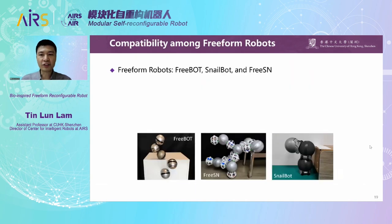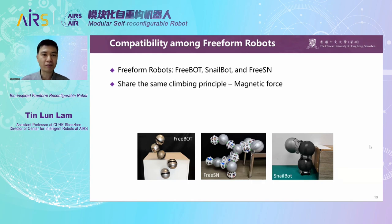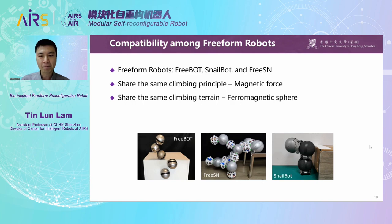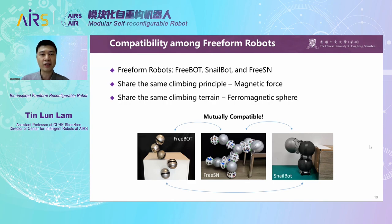We have introduced our three types of modular self-reconfigurable robots: FreeBot, SnailBot, and Friesen. We call them Freeform robots because they can all climb on other robots freely, and they share the same climbing principle — using magnetic force for climbing — and the same climbing terrain: the ferromagnetic sphere. Because of that, they are actually mutually compatible. For example, FreeBot or SnailBot can replace the node module of the Friesen system to add more mobility to the entire system. Or in a swarm of FreeBots where it's difficult to install any optical sensor, we can replace some FreeBots with SnailBots, which can have an optical sensor installed, enabling environment perception capability for the entire swarm system.